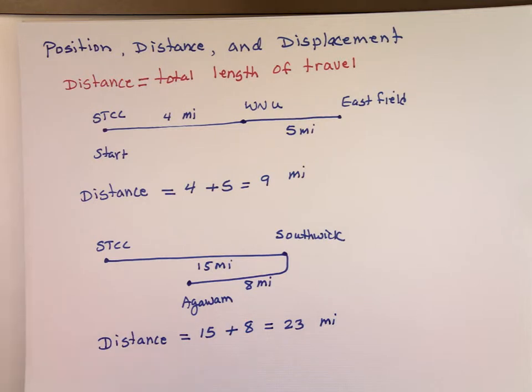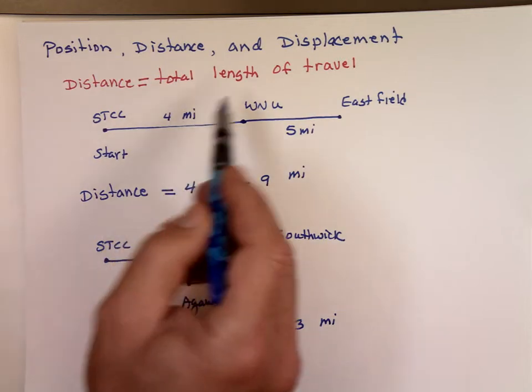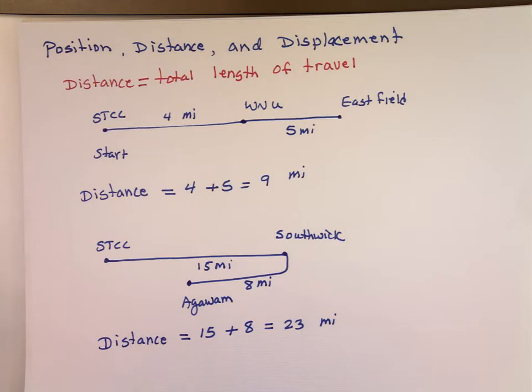So that's the definition of distance. It's the total length of travel. You add all the pieces together. Displacement, on the other hand, is different. It's change in position.